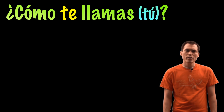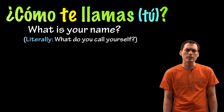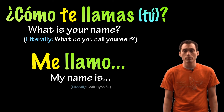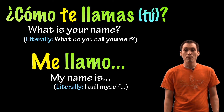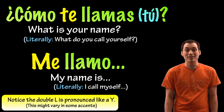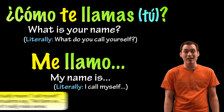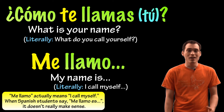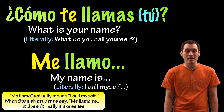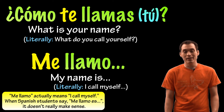If you wanted to ask somebody their name, you could use the question ¿Cómo te llamas? And they might answer Me llamo plus their name. Notice the double L here is kind of like a Y, and some places might differ in that pronunciation a little bit. Me llamo actually means 'I call myself,' so a common mistake for English speakers is to say 'Me llamo es,' thinking that it means 'my name is.' But you're actually saying 'I call myself is' and then your name, which wouldn't really make sense.